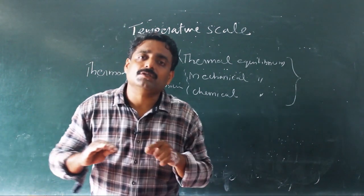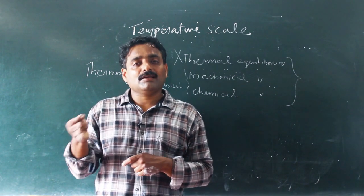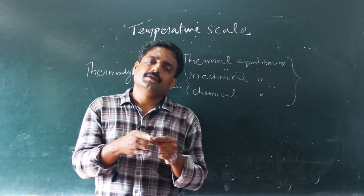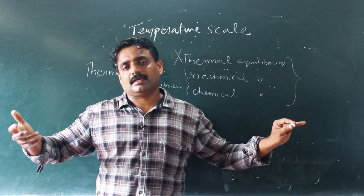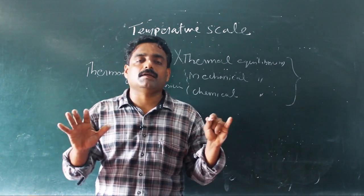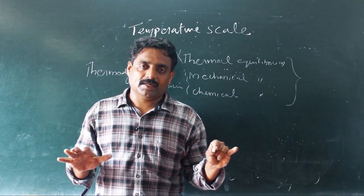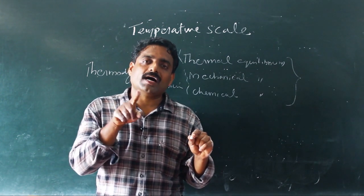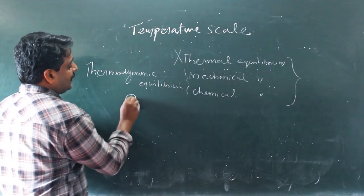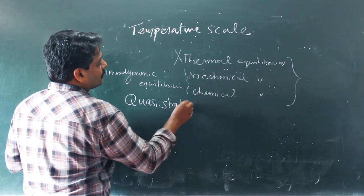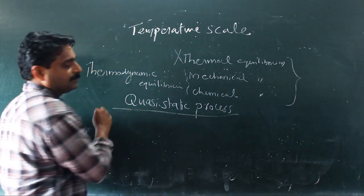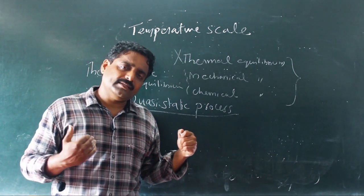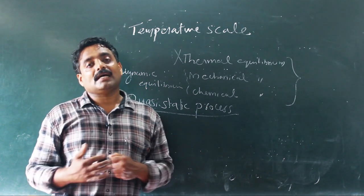The system slowly goes to the non-thermodynamic equilibrium state. The system slowly reaches an equilibrium state. That process is known as a quasi-static process. The non-equilibrium state system reaching equilibrium state through an infinitesimal ideal process is called a quasi-static process.